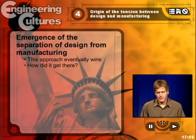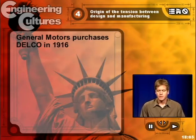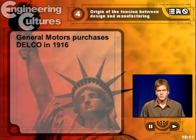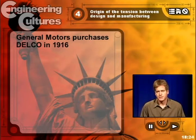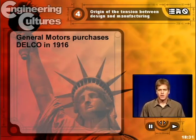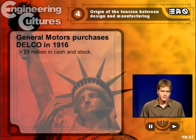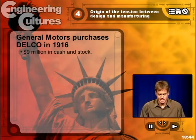How does GM go about improving its position relative to Ford? Prior to 1920, back in 1916, then president of General Motors William Durant purchased this company called the Dayton Engineering Laboratories Company — D-E-L-C-O. Yes, this is the origin of Delco. It was purchased from a guy by the name of Charles Kettering for $9 million in cash and stock in 1916.